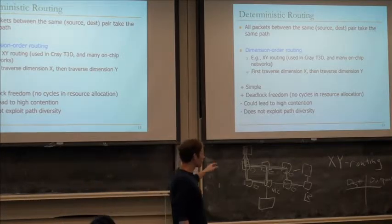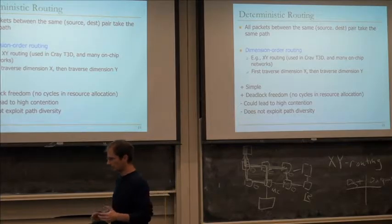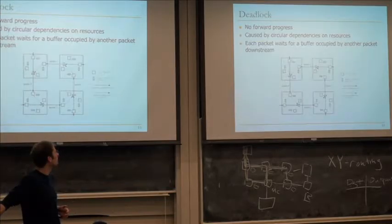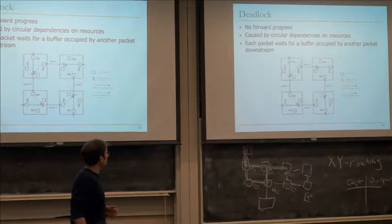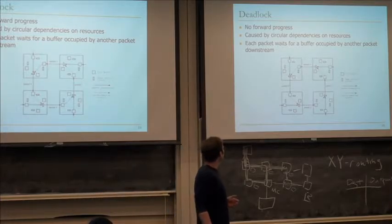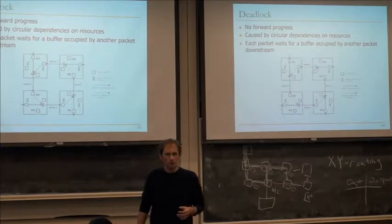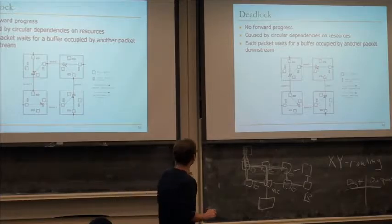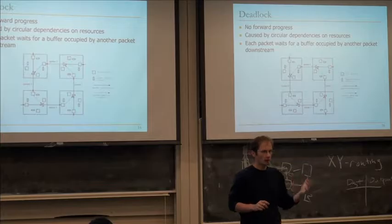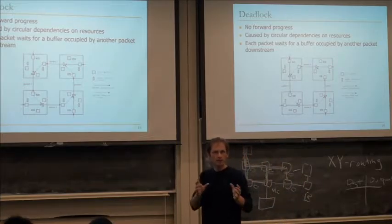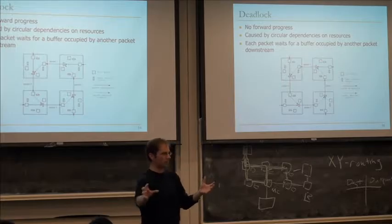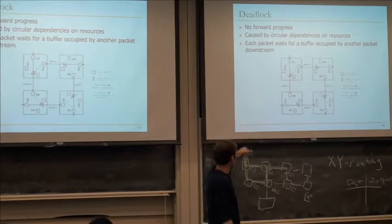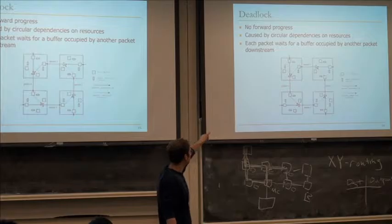Just an example of XY routing: the Cray T3D was an alpha-based system where processors were connected in a torus and used dimension order routing. It used deterministic routing — simple, with deadlock freedom. The downside is it can lead to high contention because you can have static hot paths when some flows have more traffic than others, and it doesn't exploit path diversity. Valiant routing balances network load by randomly distributing paths via random intermediate points, but is non-minimal, so it can increase packet latency if that's not offset by lower contention.